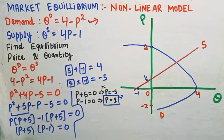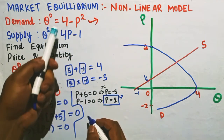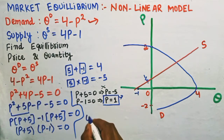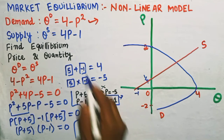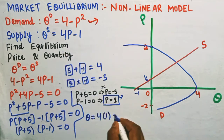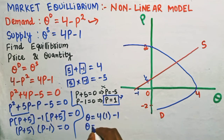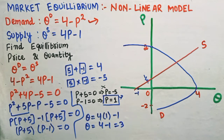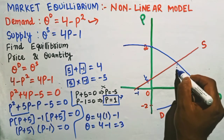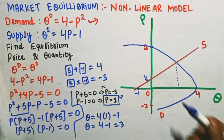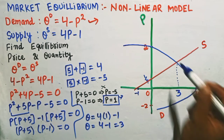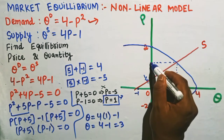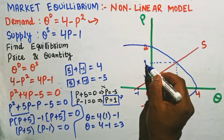To find the equilibrium quantity, we substitute P = 1 into the supply function: Q = 4(1) - 1 = 4 - 1 = 3. So the equilibrium quantity is Q = 3, and the equilibrium price is P = 1.